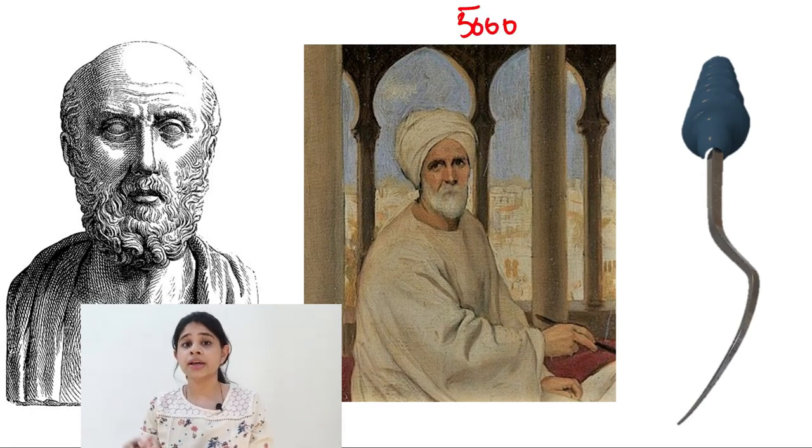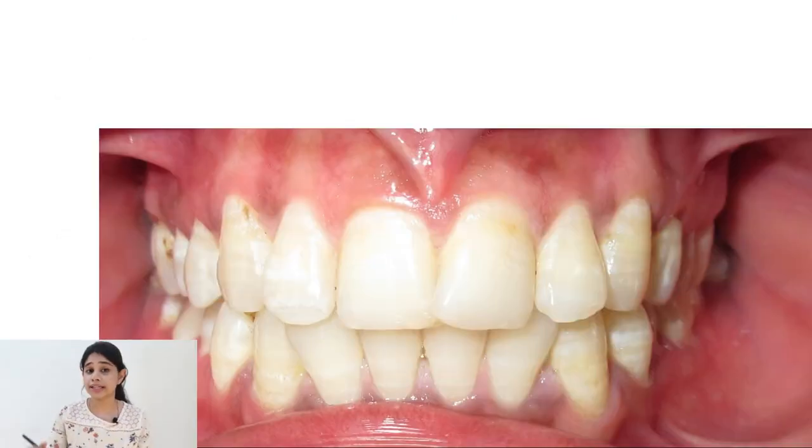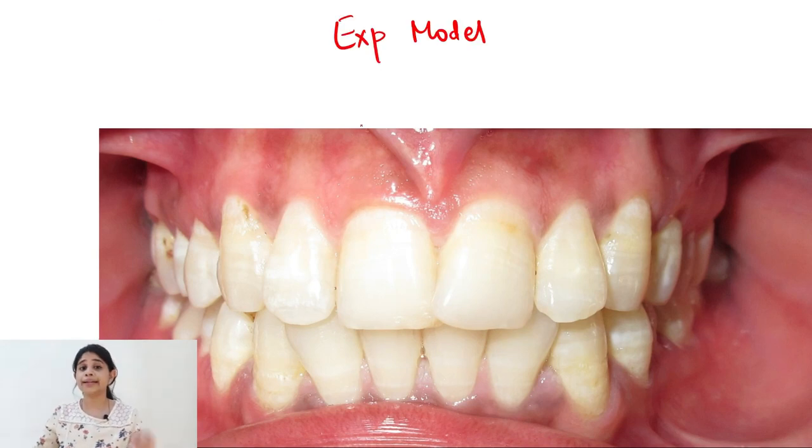So approximately for 5000 years, calculus was termed as the primary etiological factor for the initiation and progression of periodontal disease. But later on studies, which was done by Loe et al through the experimental model of gingivitis, it showed that it was not the calculus, but the plaque which was responsible for the occurrence of gingivitis in a group of individuals. So this particular experiment was a landmark study, which showed that it is not the calculus, but the plaque and the microorganisms associated with the plaque, which are responsible for inflammation and subsequent attachment loss and bone loss.